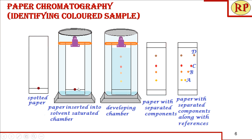The spotted paper is inserted into the chamber, clipped in place, and the lid is closed. The solvent slowly rises up through capillary action, against gravity, from bottom to top. You should not allow the solvent to reach the top edge — remove the paper one or two centimeters before the top. Before the paper dries, mark the distance traveled by the solvent using a pencil; this line is called the solvent front. Because it is a colored sample, you can see four different colors being separated from a single spot.